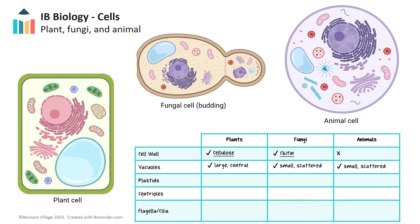Plastids exist only in plant cells and can be categorized into chloroplasts, chromoplasts, and leukoplasts. Chloroplasts contain the green pigment chlorophyll that captures light energy during photosynthesis, allowing plants to be autotrophic, or produce their own food. Both animals and fungi lack chloroplasts, meaning they must consume other organisms for energy, making them heterotrophic. Chromoplasts store pigment responsible for giving fruits and flowers vibrant colors. Leukoplasts store starch, typically in seeds or roots like carrots and potatoes. Centrioles are found in animal cells and are responsible for organizing chromosomes during cell division; however, they do not appear in plant or fungal cells.